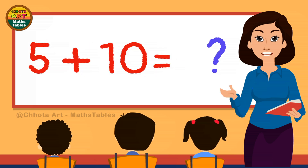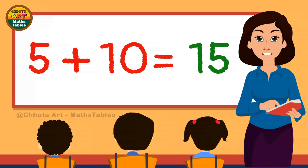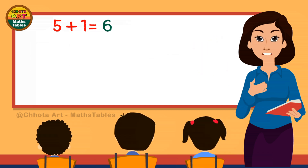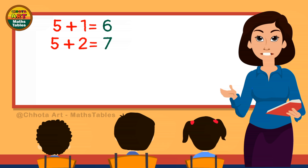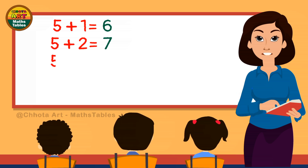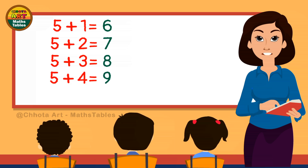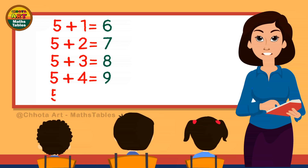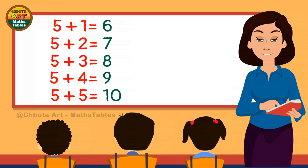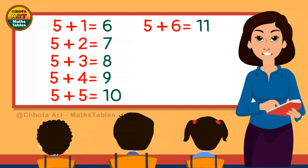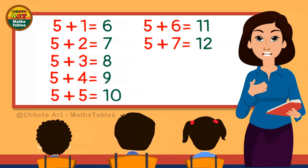5 plus 1 is 6. 5 plus 2 is 7. 5 plus 3 is 8. 5 plus 4 is 9. 5 plus 5 is 10. 5 plus 6 is 11. 5 plus 7 is 12.